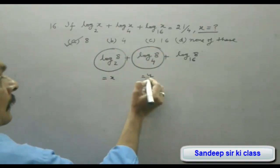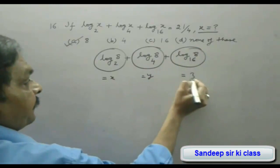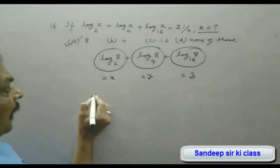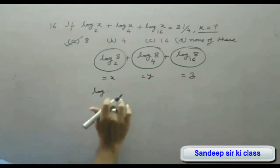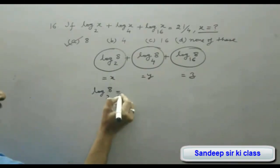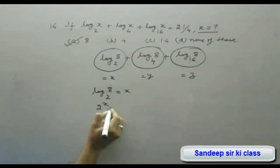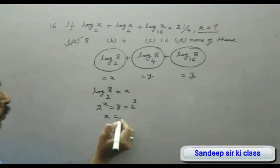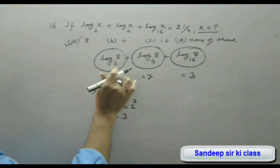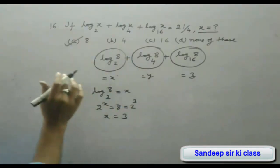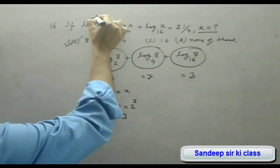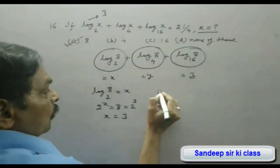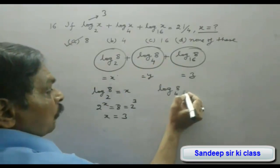Let the three terms be x, y, and z respectively; we need x + y + z = 21/4. For the first term: log 8 to the base 2 = x means 2^x = 8 = 2³, so x = 3. The first term equals 3.